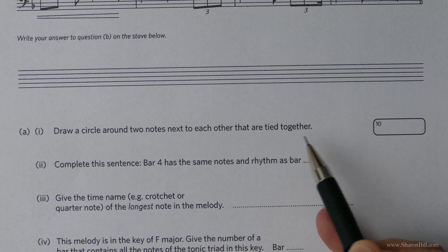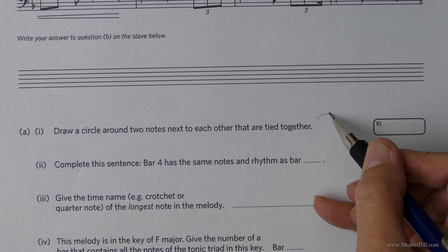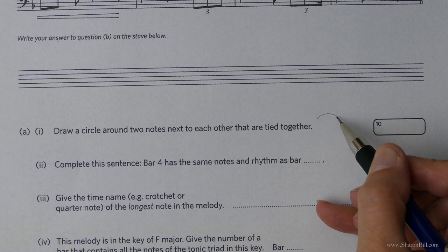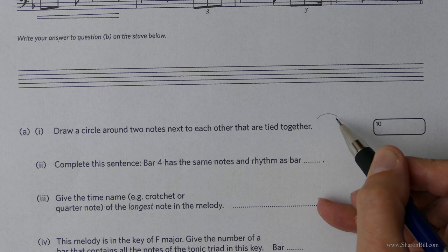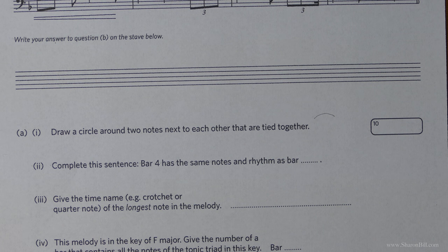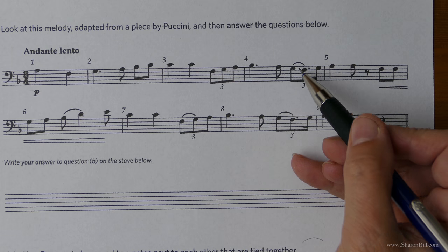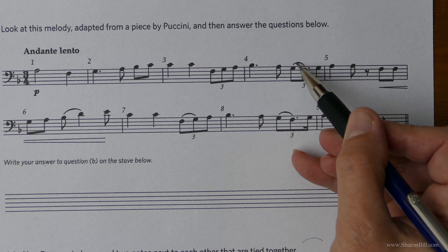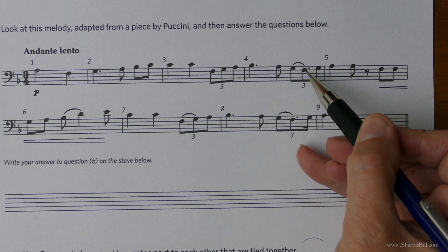So we'll check these through together now. First job is we're asked to draw a circle around two notes next to each other that are tied together. So although this is the symbol for a tie, we've got to be careful that we find it in the correct application. So it's a tie and not a slur, which is the same shape. So for example, here in bar four, that won't be correct because that's a slur joining two different notes together, meaning to play them smooth and connected.